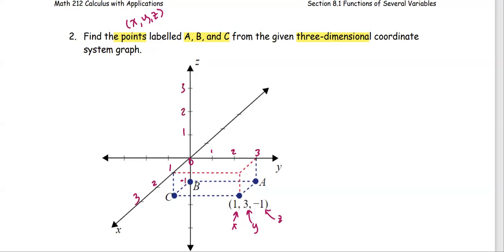The opposite direction is going to be negative. For point A, it is zero units away from the origin in the x direction, three units away in the y direction, and negative one — one unit away in the negative direction for the z-axis. So negative one.